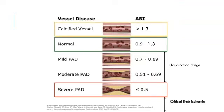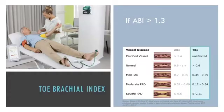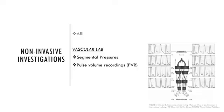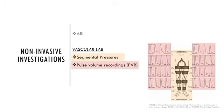If the ABI is 1.3 or higher, it's likely that the ankle arteries are calcified and non-compressible. A toe brachial index can be done, since calcification often spares the digital arteries. A normal toe brachial index is greater than 0.6. Other non-invasive tests can be done in the vascular lab. A segmental pressure study measures thigh and calf pressures to observe pressure differences between adjacent cuffs; a drop greater than 20 between two levels indicates a hemodynamically significant lesion. Pulse volume recordings record the pattern and shape of waveforms produced by arterial blood flow at each level to assess blood flow to the lower limbs.